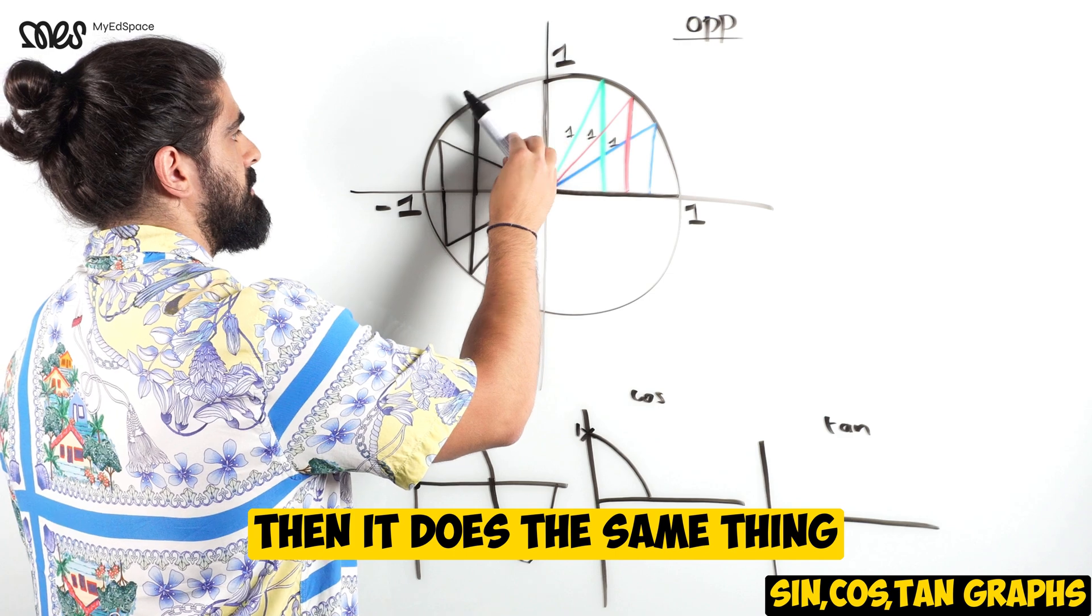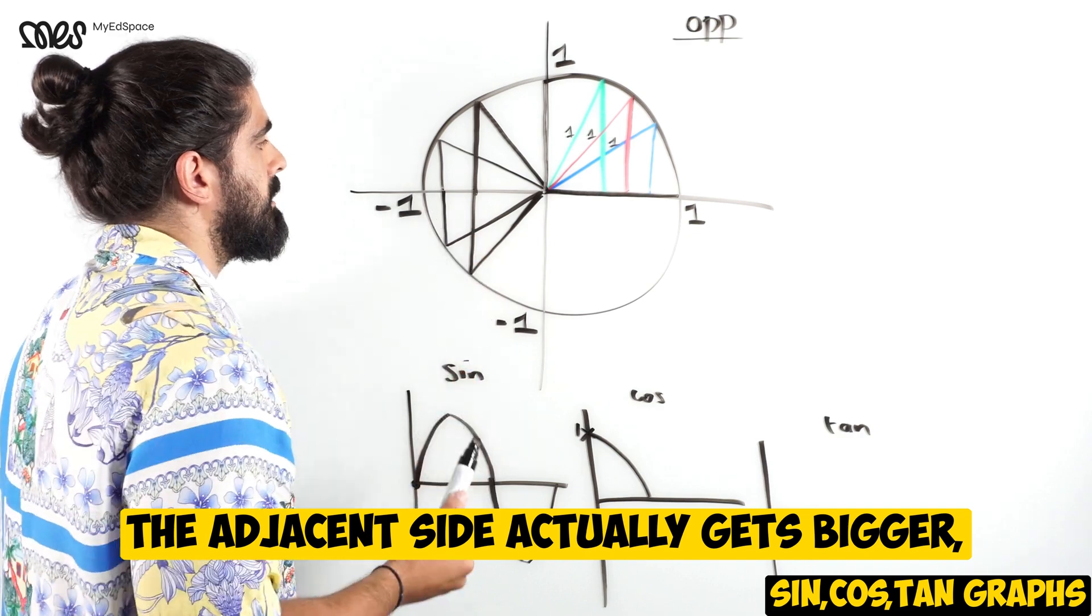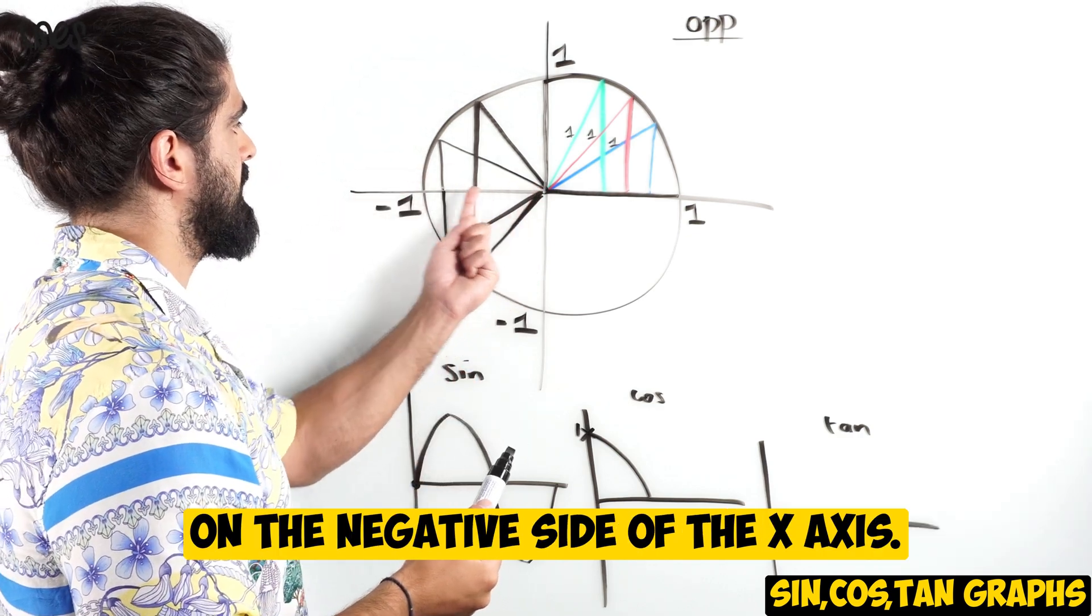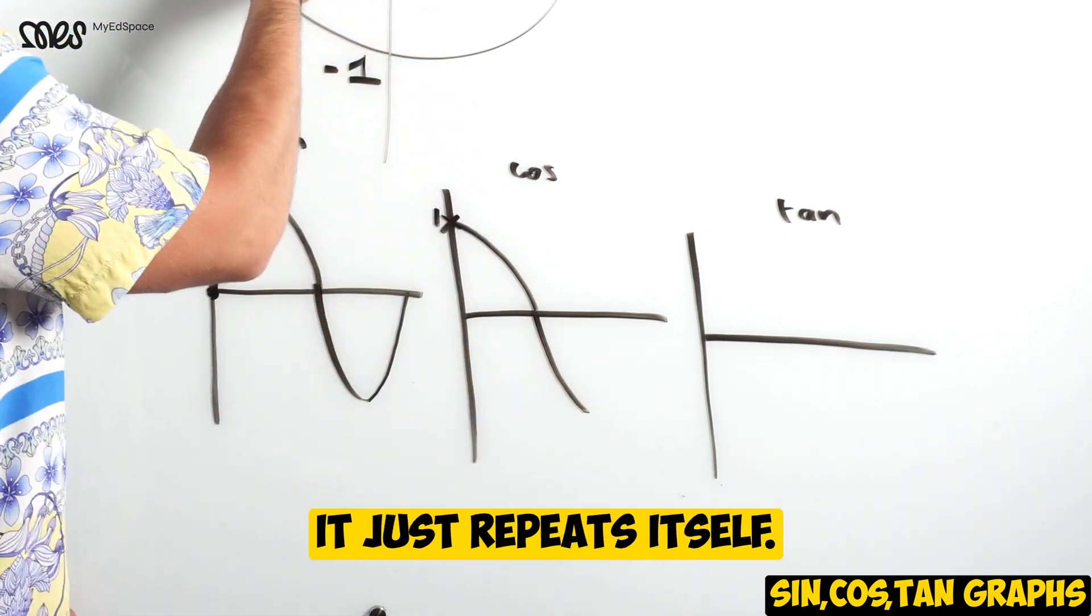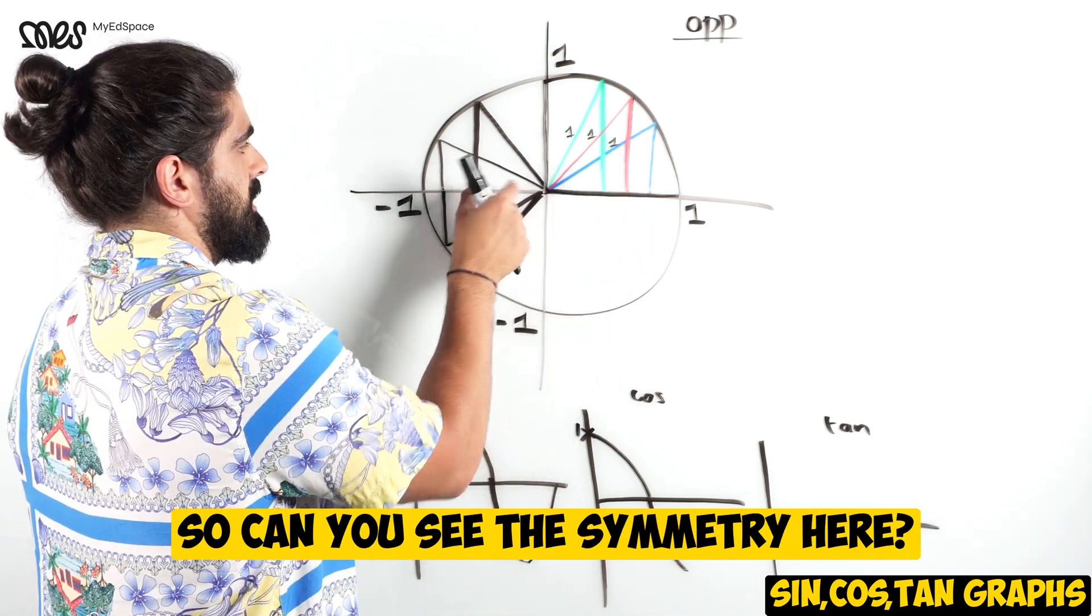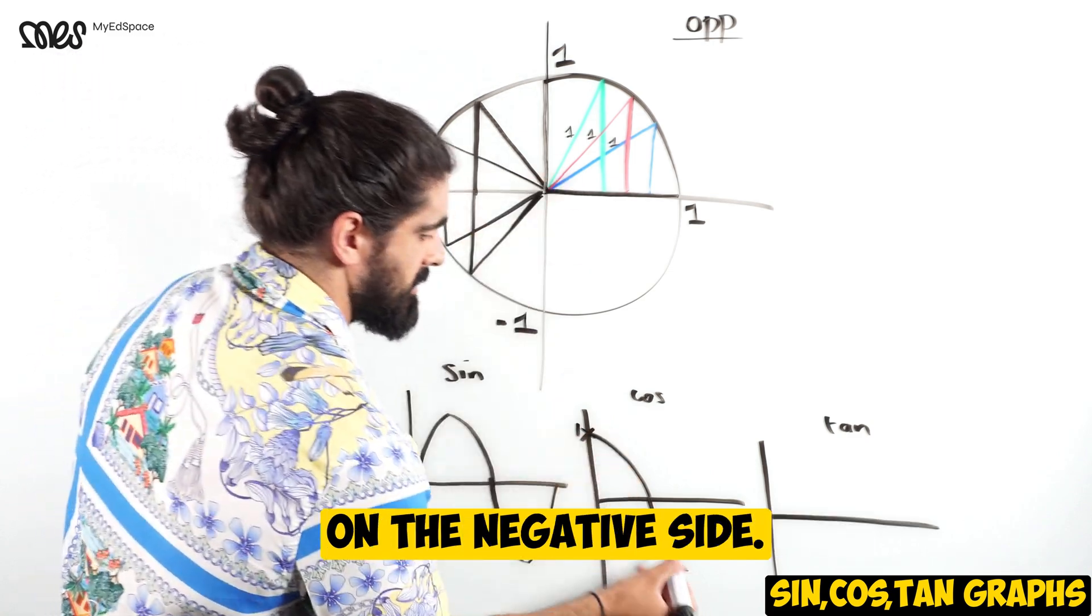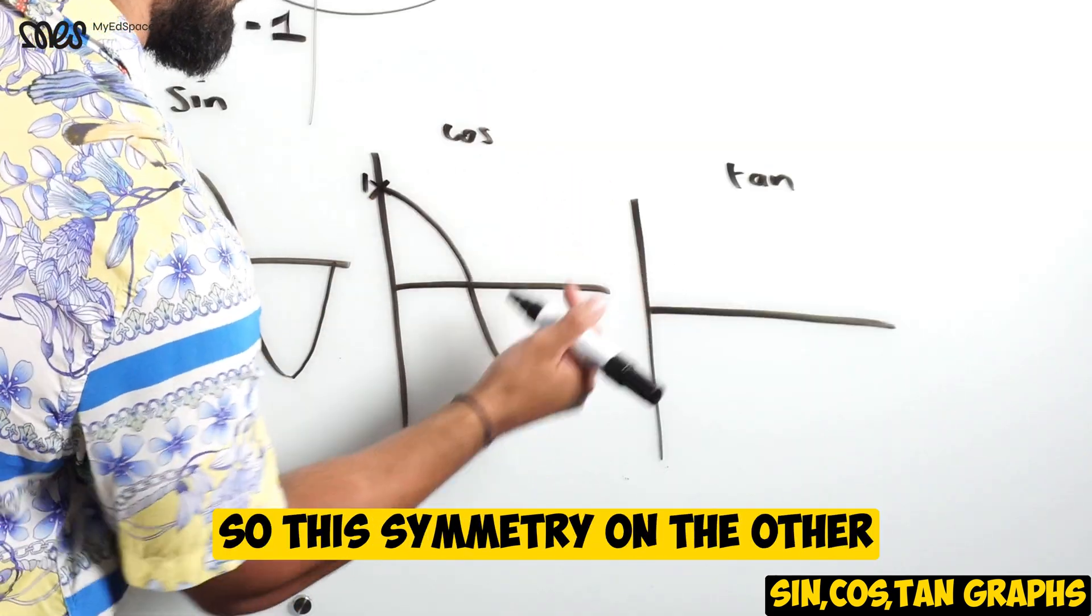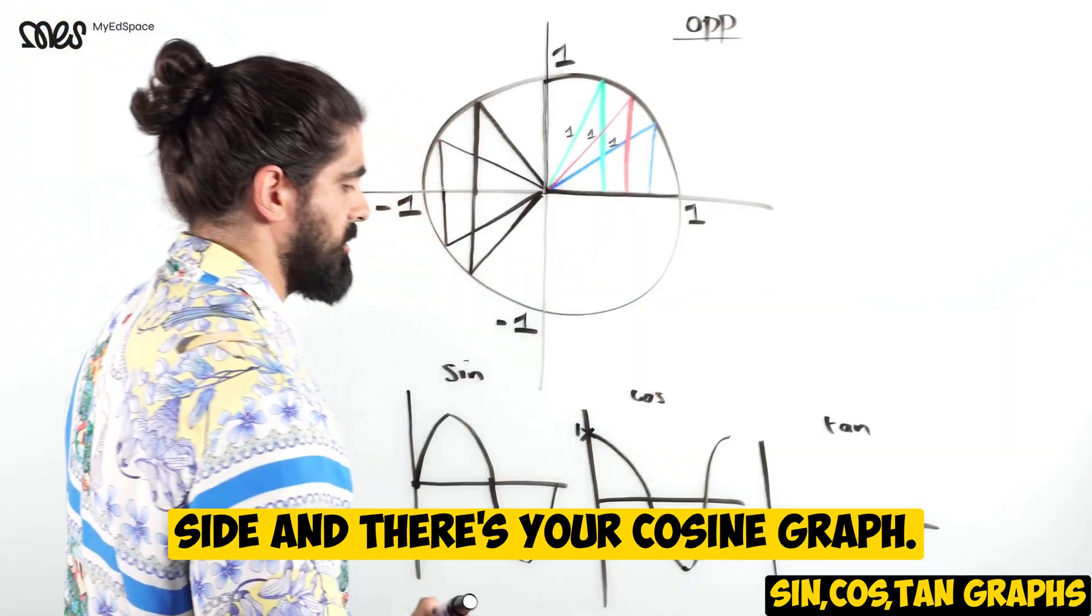Then it does the same thing on the other side. The adjacent side actually gets bigger, but it's negative on the negative side of the x axis, so it goes below. And then it just repeats itself. Can you see the symmetry here? And there's your cosine graph.